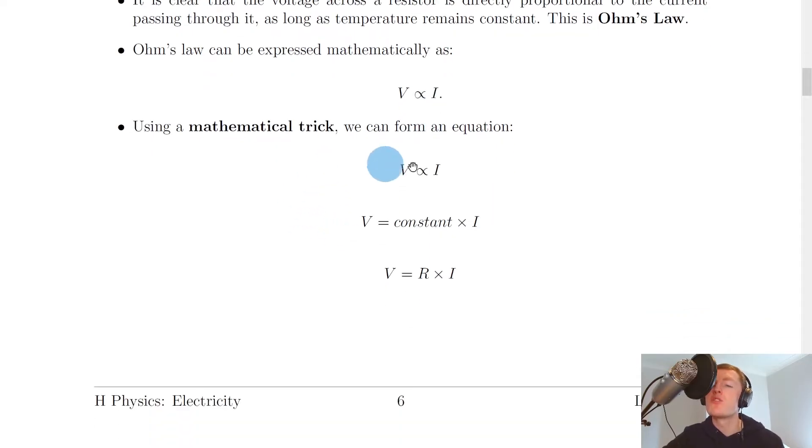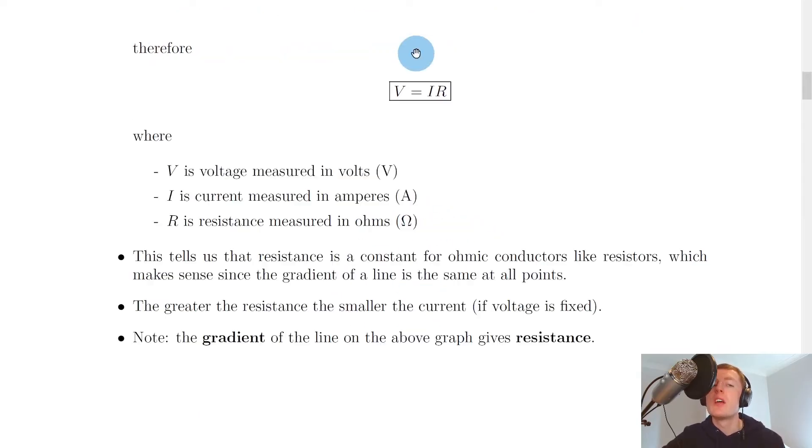Using a mathematical trick, we can form an equation. You might remember that if we have this proportional sign, we can get rid of it and introduce the equal sign if we multiply the right-hand side by a constant. So we get V equals a constant times I. And this constant is actually the resistance. Therefore, with a bit of rearranging, we get the equation for Ohm's Law, which is V equals IR.